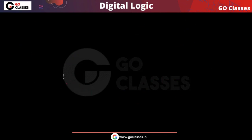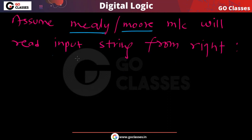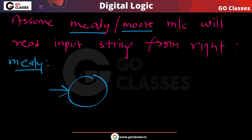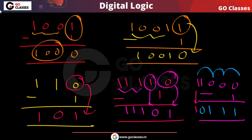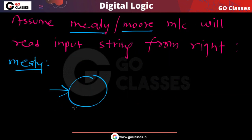If you understand the idea, then creating the Mealy machine is very simple. Assume the Mealy machine is reading the input from the right. Any number of 0s that are coming, you just change them to 1. If 0 is coming, make it 1; if 0 is coming, make it 1.